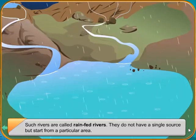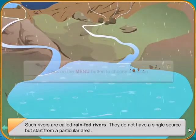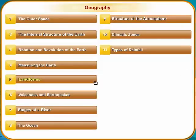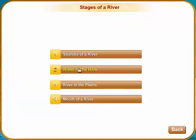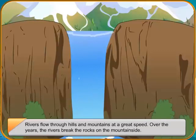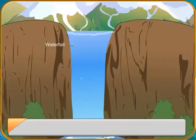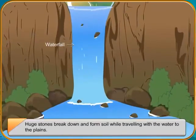Rivers flow through hills and mountains at a great speed. Over the years, the rivers break the rocks on the mountainside. Huge stones break down and form soil while traveling with the water to the plains. Do you know what forms when a river falls over steep slopes in the hills?